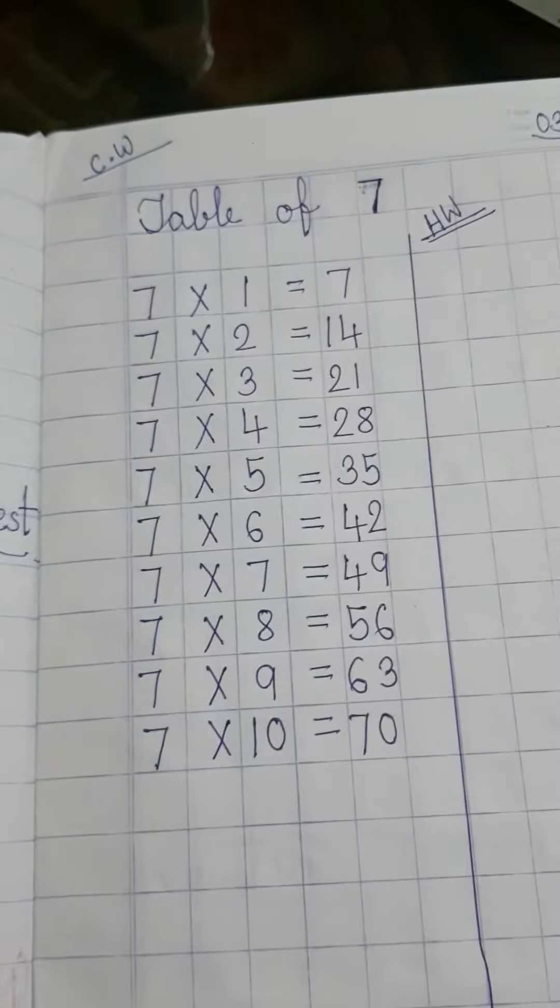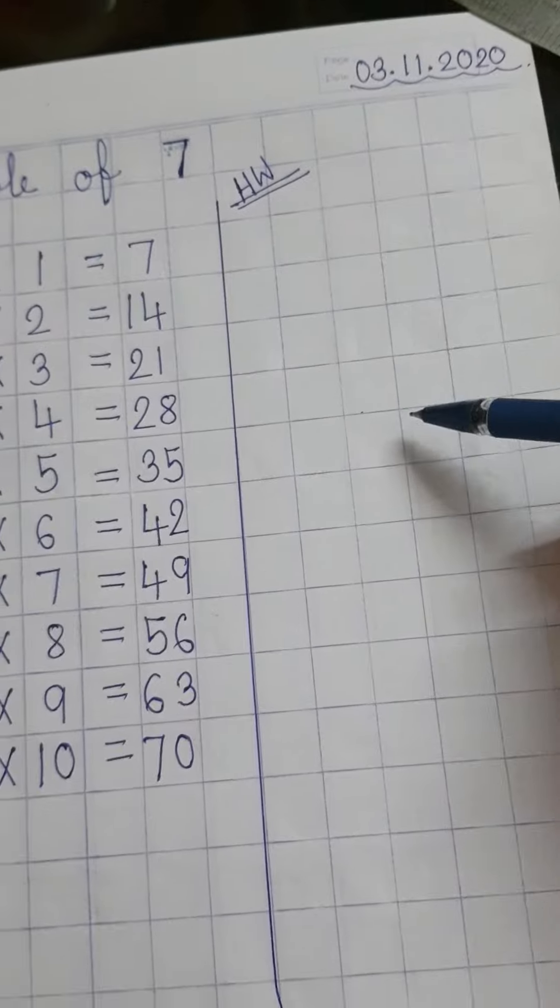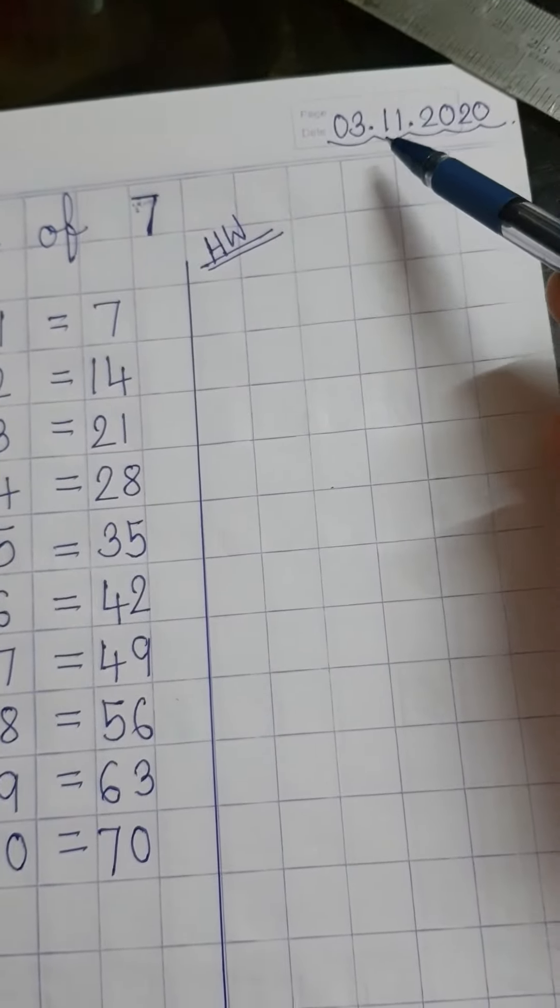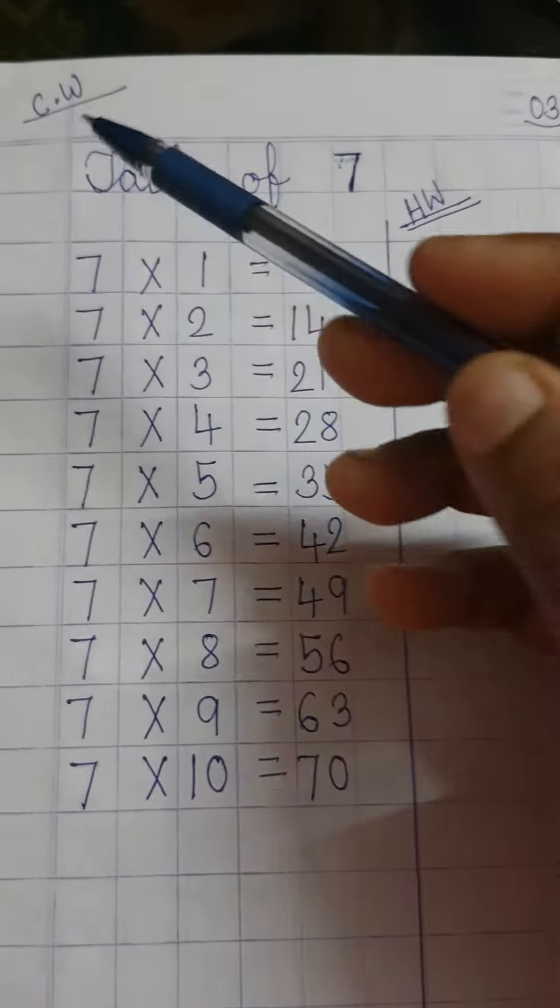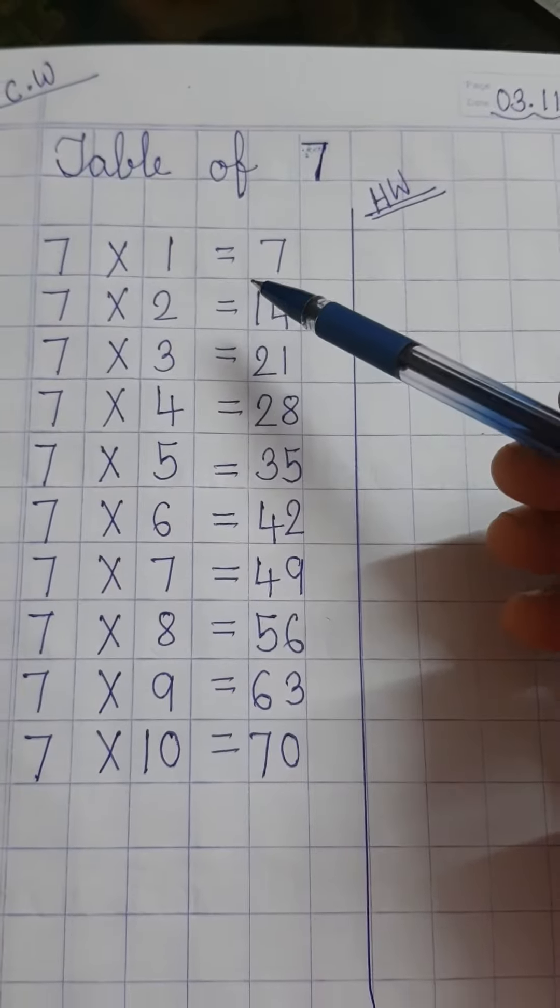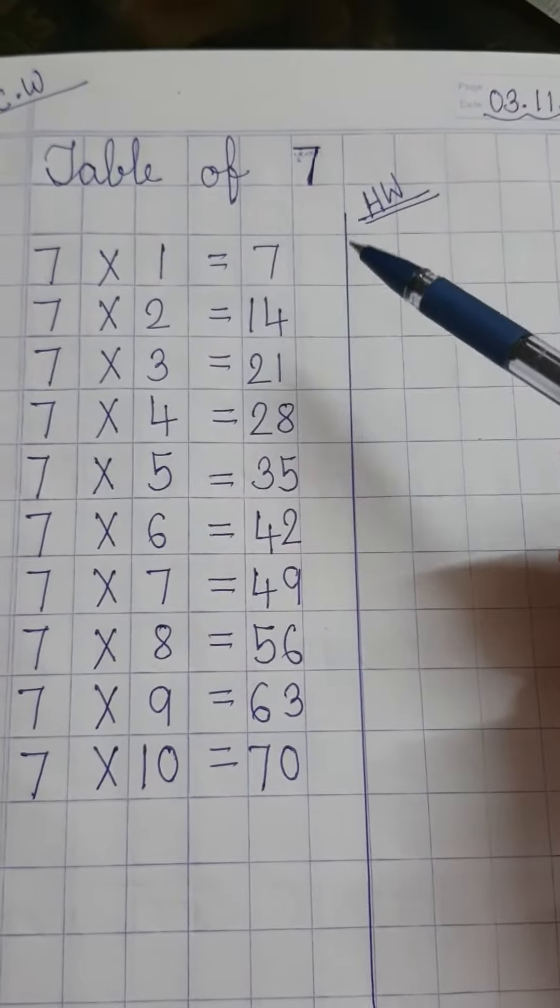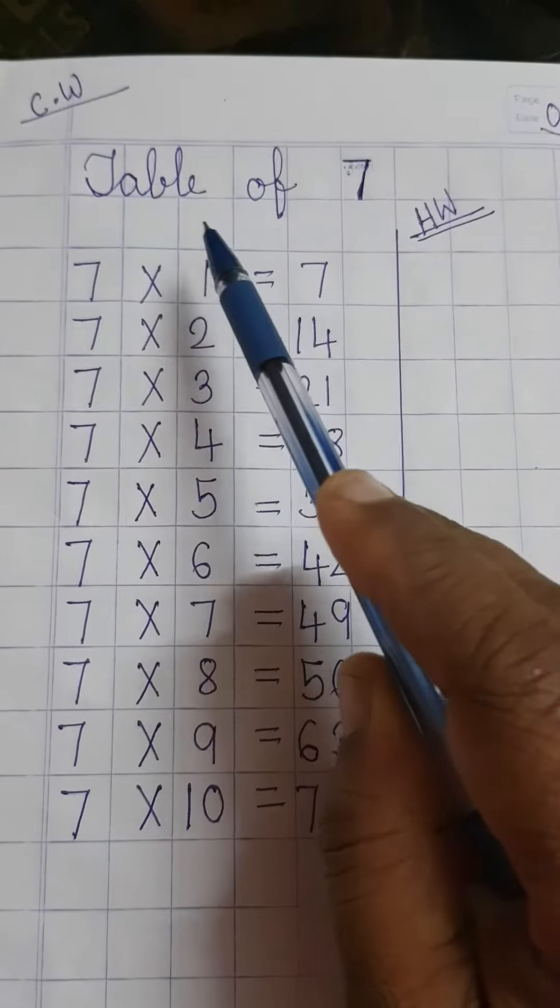Come to this page, the next page. Write today's date: 03.11.2020, and write here CW. Today we are going to learn the table of 7, so write like me: Table of 7.